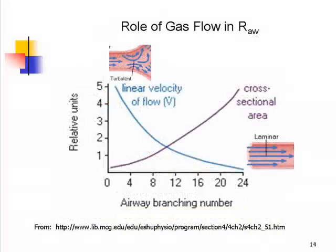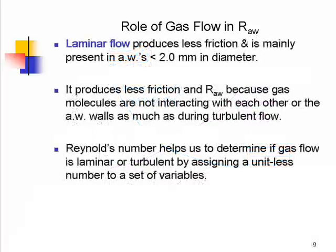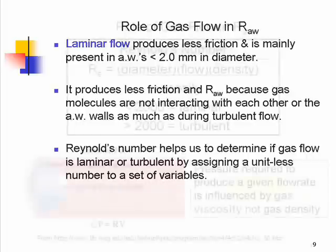The airflow patterns that occur in the upper airway versus the lower airway are distinct and represented by Reynolds number. Laminar flow is mostly associated with airways less than two millimeters in diameter, whereas turbulent flow is associated with upper airway issues.